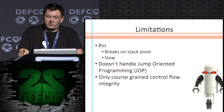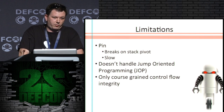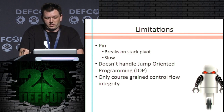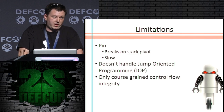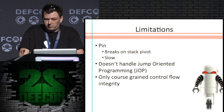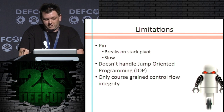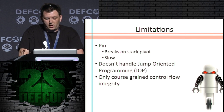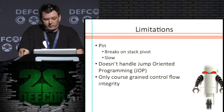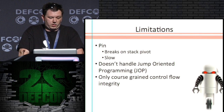Let's talk about the limitations. Obviously, breaking down the stack pivot is a pretty big limitation. Since we're running this in PIN, it's also kind of slow. This is not ready for prime time — I don't want to make you think that it is. We don't handle jump oriented programming (JOP) — I would need a sample to test that out first. And we only do coarse-grain control flow integrity, not fine-grain yet.